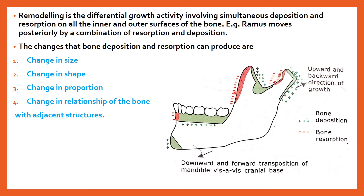The changes that bone deposition and resorption can produce include: change in size, change in shape, change in proportion, and change in relationship of the bone with adjacent structures. For example, if any structure is present when the bone was at position X, when the bone changes to position Y, the relationship of that structure with the bone will change.